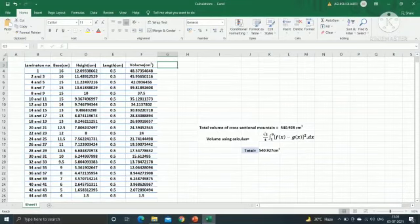Here are the calculations. As you can see, we used all 45 laminations in total and calculated the volume of the cross section by calculating the volume of each lamination. In another way, we calculated the volume using calculus. The values are very close with very little difference.